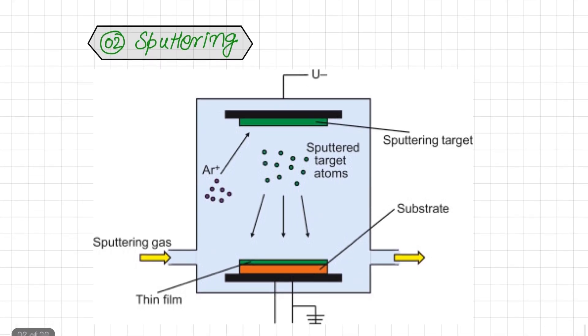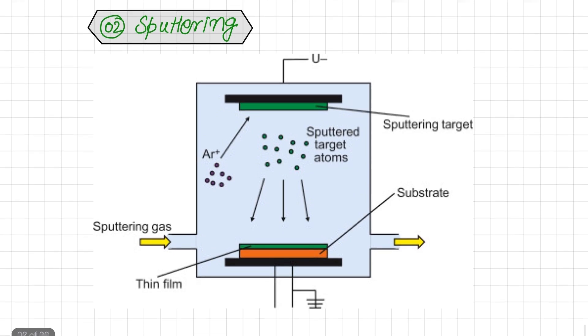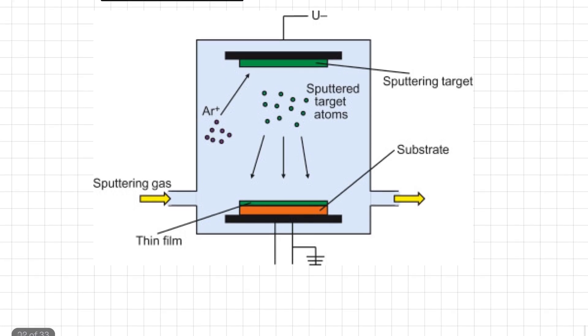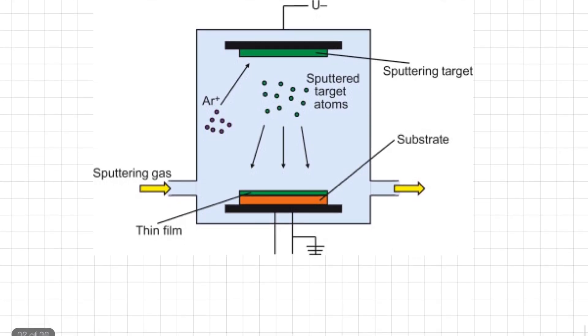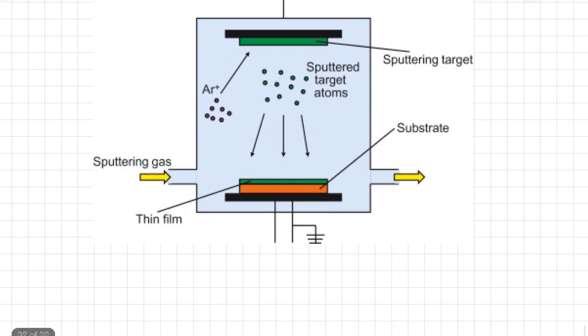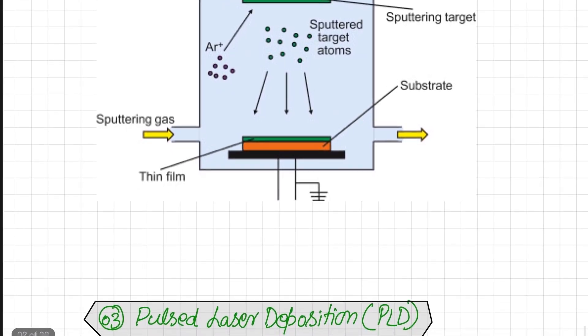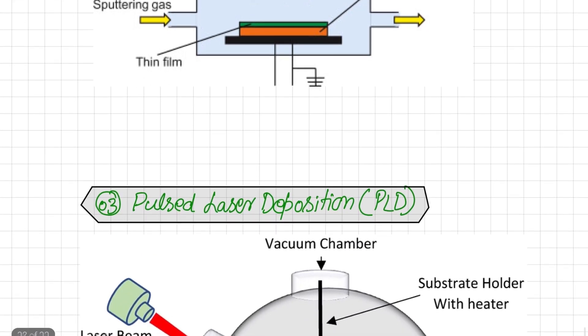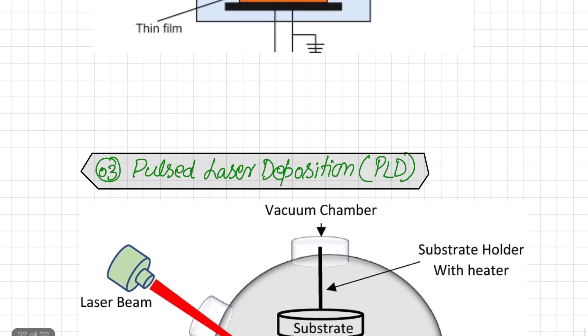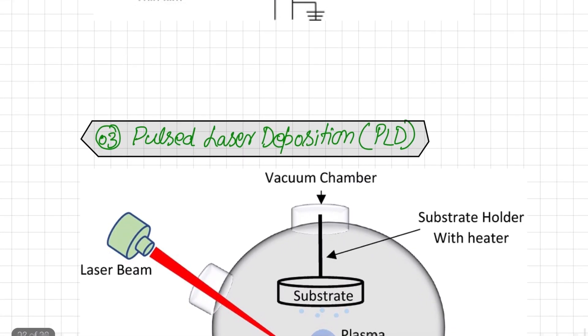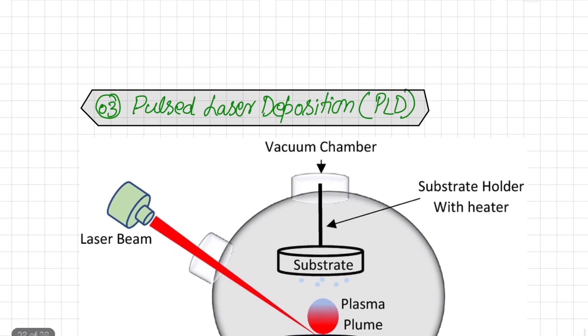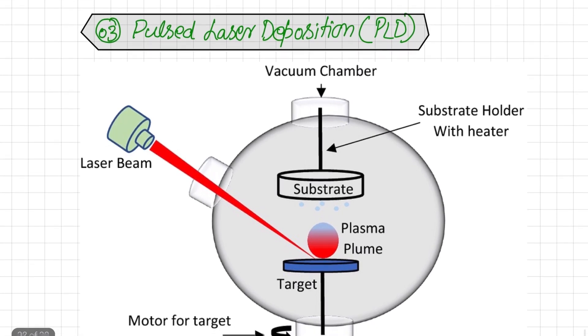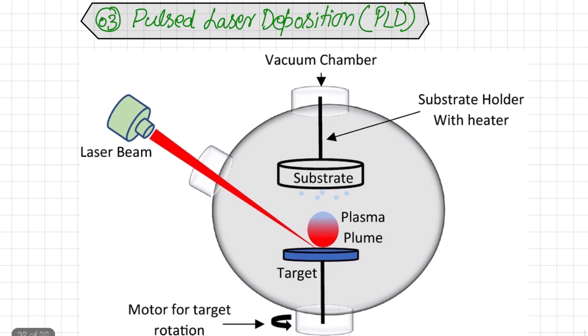However, there are some disadvantages. It increases the complexity of deposition and cost of production. It is actually a line-of-sight technique, meaning that it is extremely difficult to coat undercuts and similar surface features. Similarly, the per capita cost is high. Some processes operate at high vacuums and temperatures, which require extra skill. Processes require large amounts of heat followed by rapid cooling systems, and the rate of coating deposition is usually low.